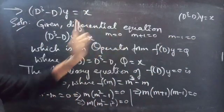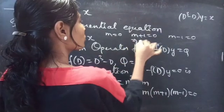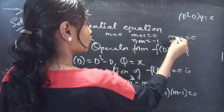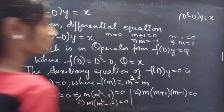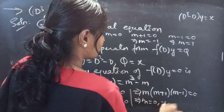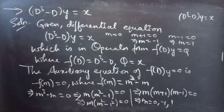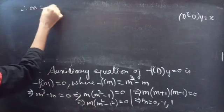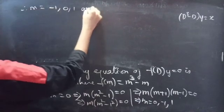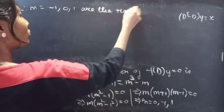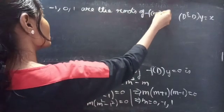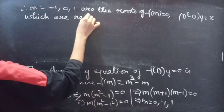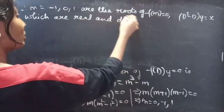So m = 0 is one root. From m + 1 = 0, we get m = -1. From m - 1 = 0, we get m = 1. The roots are m = 0, -1, and 1 — three real and distinct roots. Therefore, m = -1, 0, 1 are the roots of the auxiliary equation f(m) = 0, which are real and distinct.